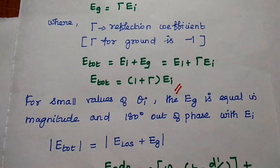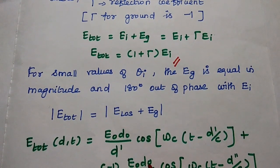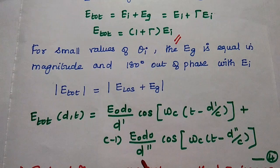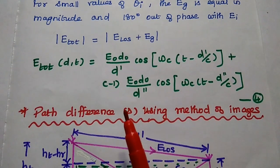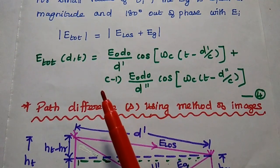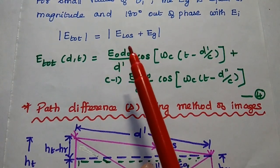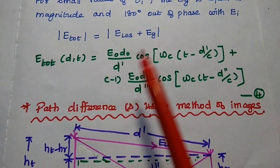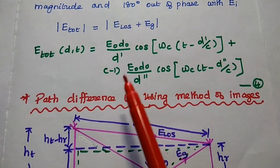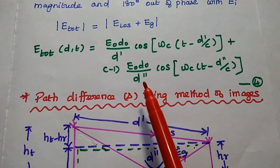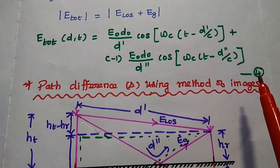For small values of the incident angle, the magnitude of the reflected wave is almost equal to the incident wave, but the phase is out of phase. Next, we find the total electric field by substituting the second and third equations. The total electric field E(d, t) equals the line-of-sight field E0*d0/d' * cos(omega_c*t - d'/c), minus the ground reflected term E0*d0/d'' * cos(omega_c*t - d''/c), since the reflection coefficient is -1 for ground reflection. Consider this as the fourth equation.